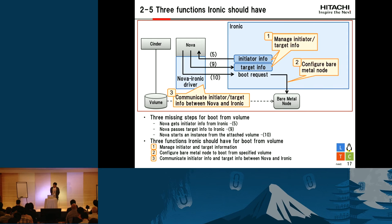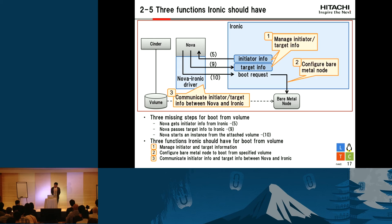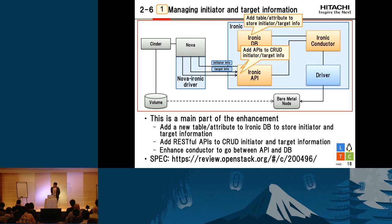This is a detailed picture. As I explained in the previous slide, there are three missing steps. One is getting initiator information. The second one is passing the target information to Ironic. And the third one is setting up the bare metal node to boot from volume. To fulfill these missing steps, Ironic should have the following three functions: managing initiator and target information, configuring the bare metal node, and communicating initiator and target information between Nova and Ironic.